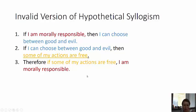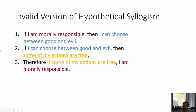I found one here that could possibly trick someone. I made the A part red, the B part blue, the C part yellow. So if A then B, if B then C — but instead of A then C, I did C then A, which makes it invalid. If I am morally responsible then I can choose between good and evil; if I can choose between good and evil then some of my actions are free; therefore if some of my actions are free I am morally responsible. This is invalid. What it should say is: if I am morally responsible then some of my actions are free.